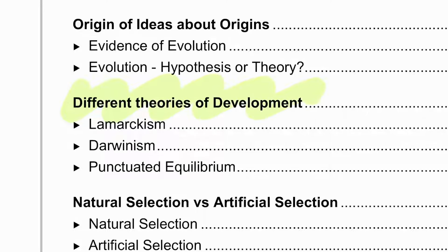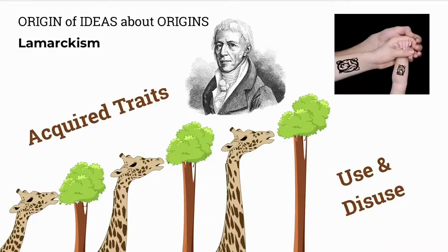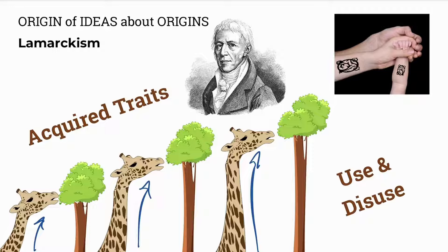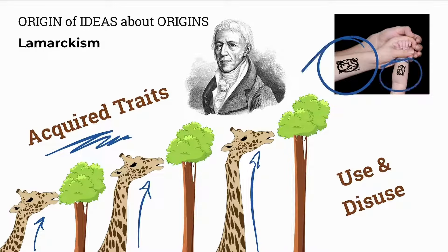Then we'll look at different scientists and their theories, like Lamarck, Darwin, and Gould and Eldridge in their theory of punctuated equilibrium. Lamarck talked about the desire or the need to develop certain structures or changes. So if a giraffe had to stretch its neck to reach food sources higher up in the trees, these acquired characteristics during its lifetime, like elongated necks, are transferred to offspring. So if you have a tattoo, you could pass it on to your offspring.